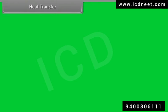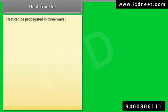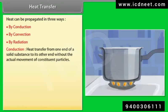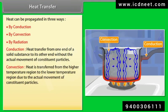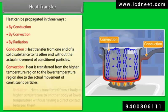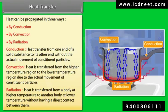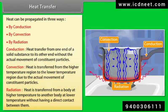Heat transfer: Heat can be propagated in three ways. Number 1, by conduction — heat transfer from one end of a solid substance to the other without actual movement of constituent particles. Number 2, by convection — heat is transferred from higher to lower temperature region due to the actual movement of constituent particles. Number 3, by radiation — heat is transferred from a body at high temperature to another at lower temperature without direct contact between them.